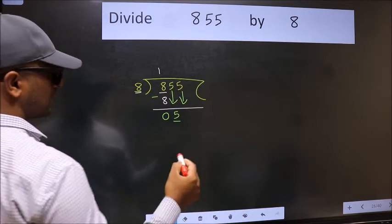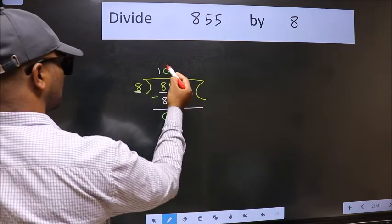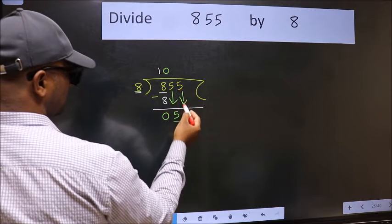The rule to bring down the second number is we should put 0 here, then only we can bring this number down.